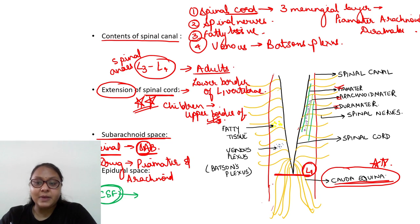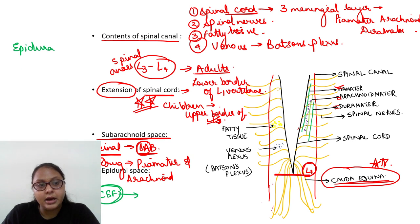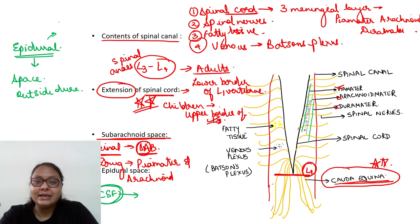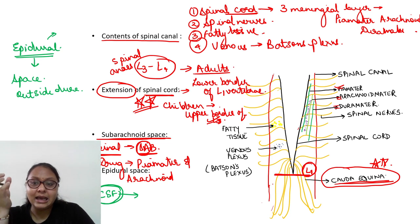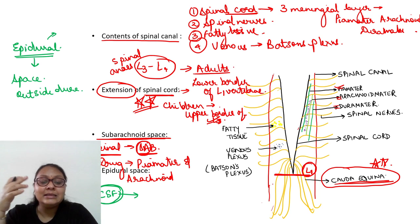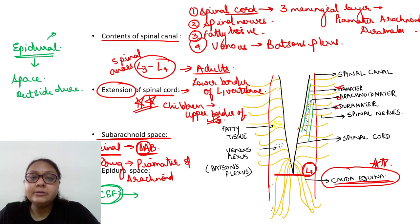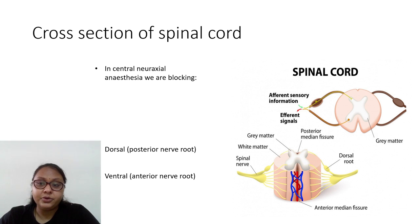What is epidural anesthesia? The epidural space is outside the dura. It is a space with negative pressure and no fluid content. When we deposit the drug in the epidural space — outside the dura — that is epidural anesthesia. The drug gets absorbed from that space and anesthetizes the spinal nerves.